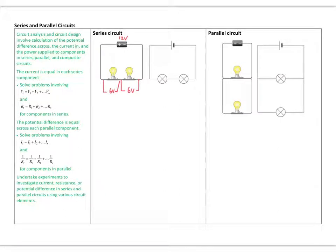If these were 12-volt light bulbs, each would only get six volts, so they wouldn't glow very brightly. Also, if one light bulb blew, it would cause a break in the circuit and all the lights would go out. That's a disadvantage of a series circuit — for car headlights or lounge room downlights, you don't want every light to go out because one fails, and you also want maximum brightness.